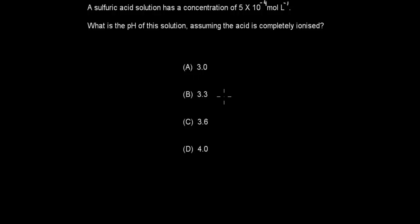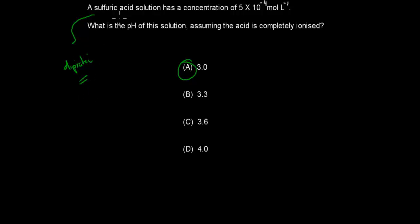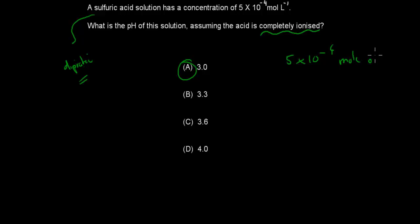Welcome back. This was actually a pretty tricky question because you might have been misled. The correct answer is A. The reason is that sulfuric acid is a diprotic acid, which means there are two hydrogen ions that can come off each sulfuric acid molecule, and it says the acid is completely ionized. Usually for a monoprotic acid, we would have 5 × 10⁻⁴ moles of hydrogen.